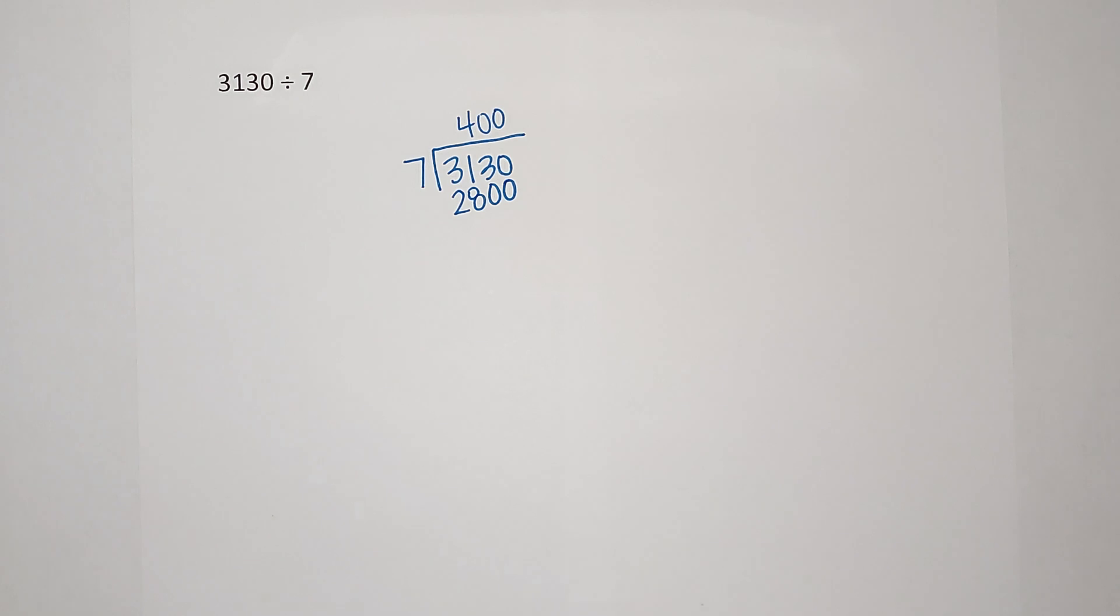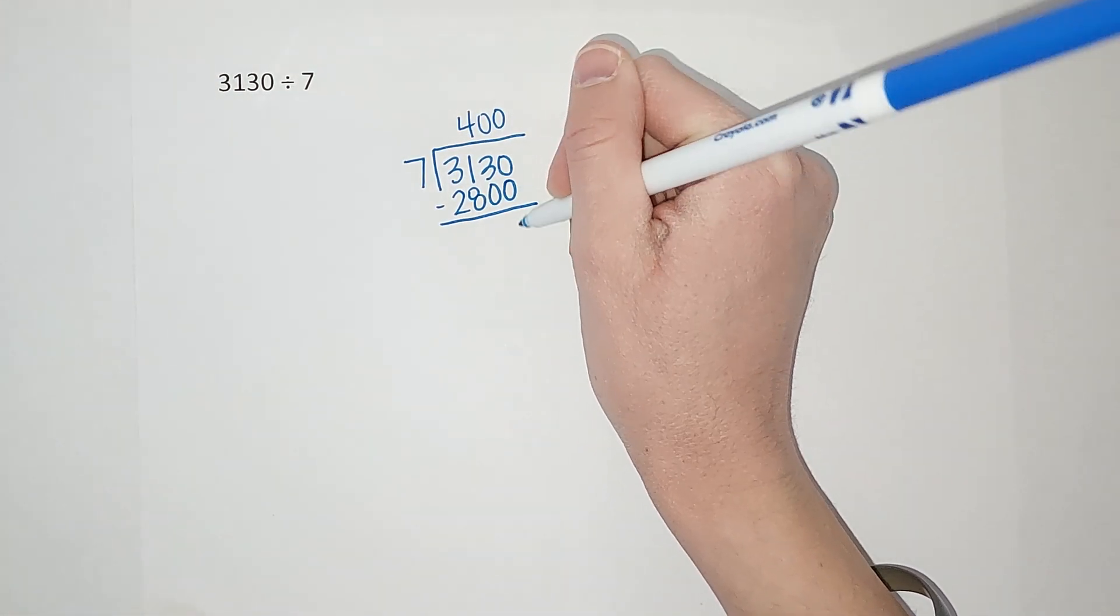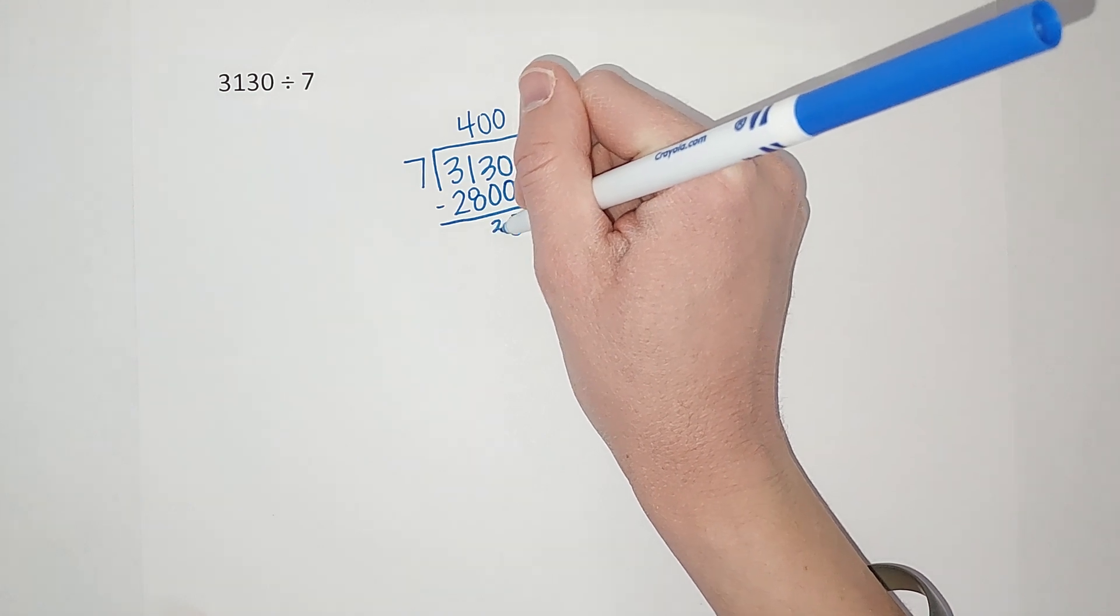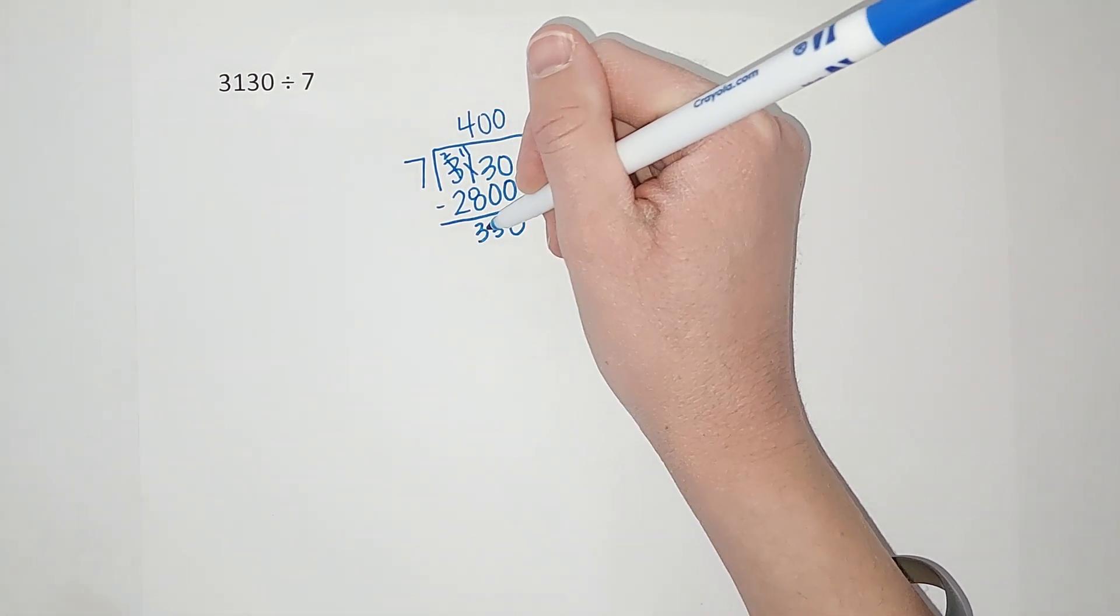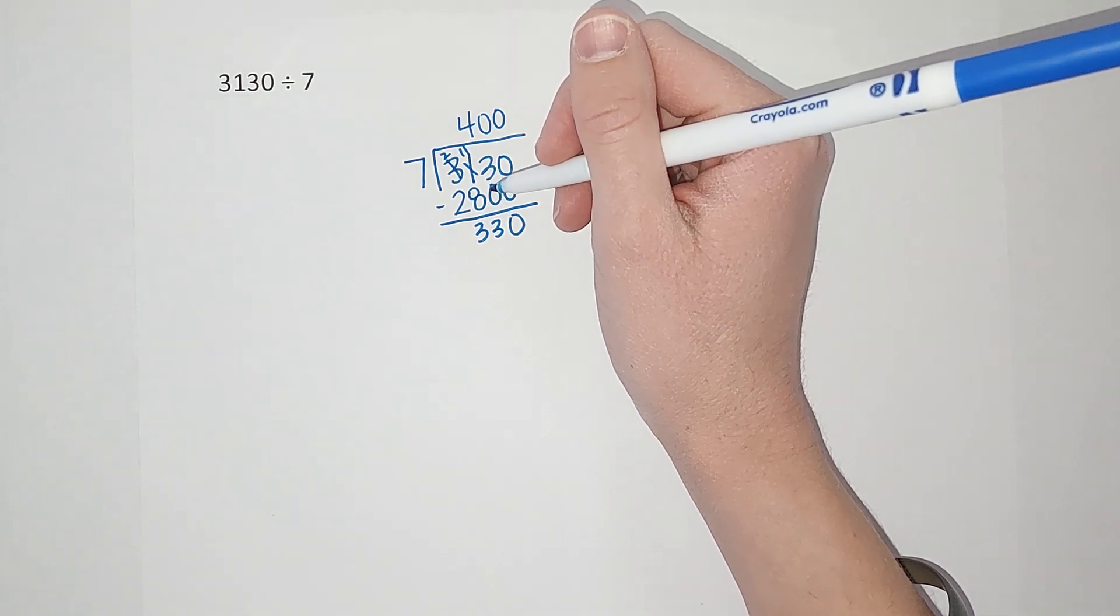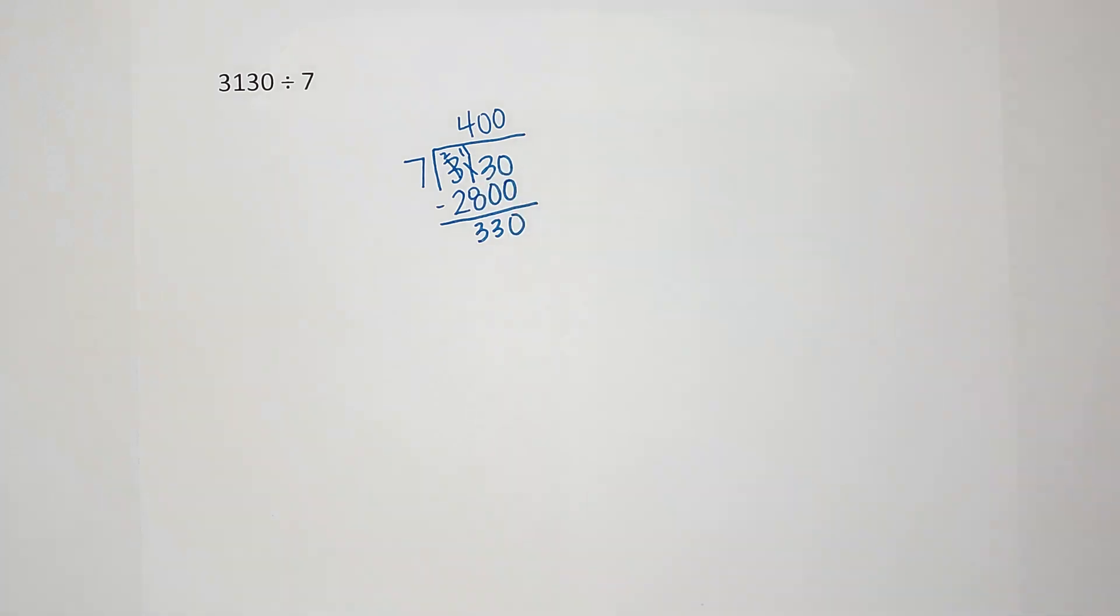So I'm subtracting here and I am left with 330. So again, it's kind of like, okay, how many times does seven go into 330?